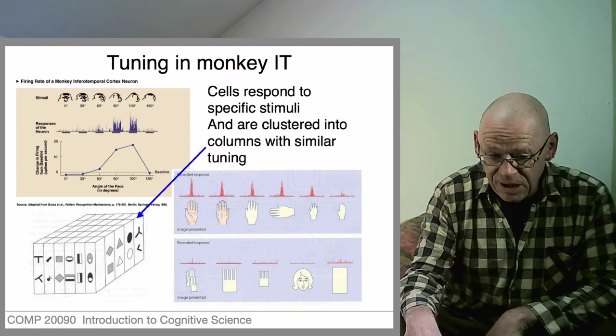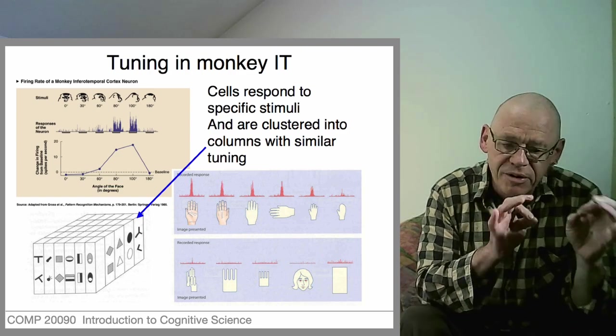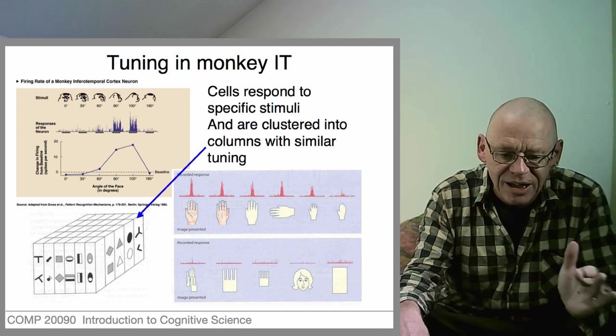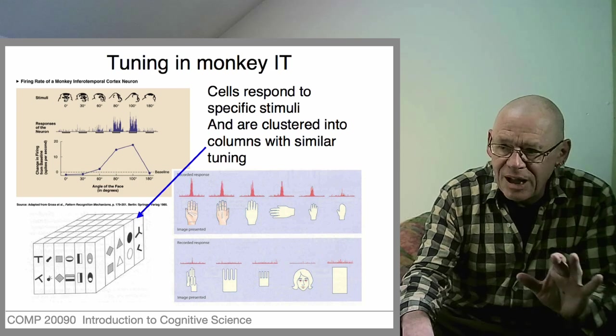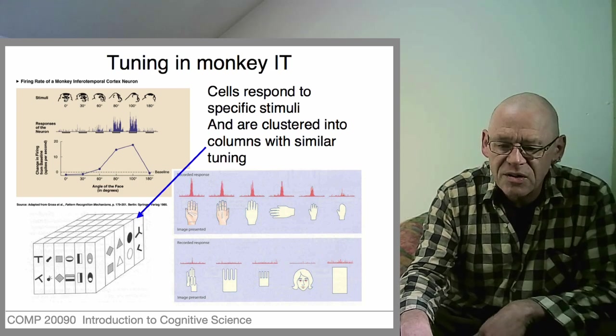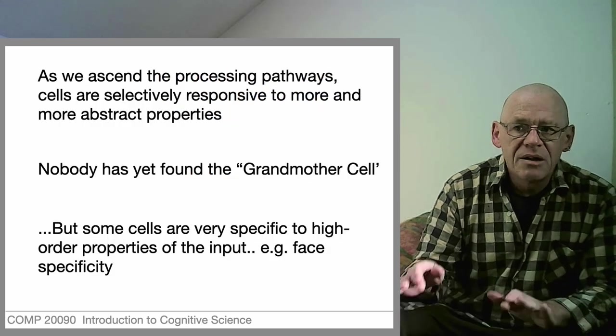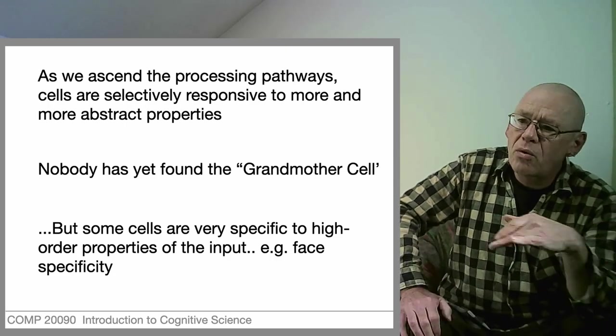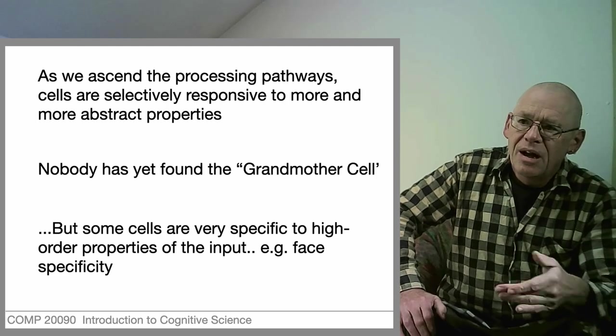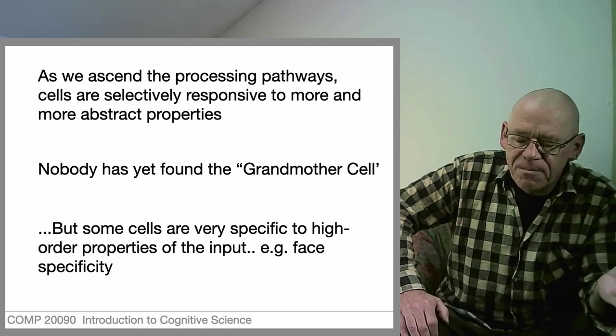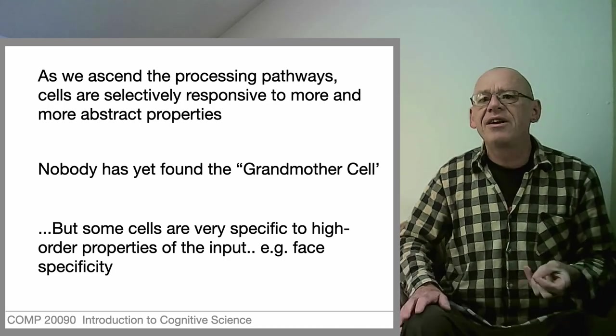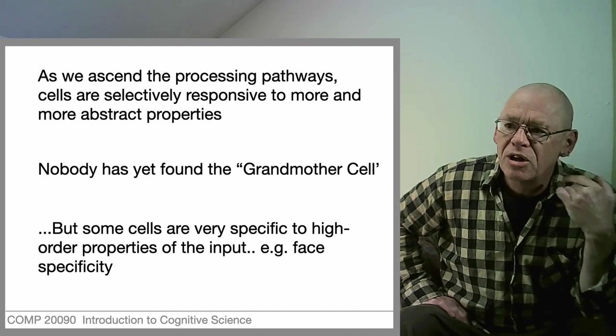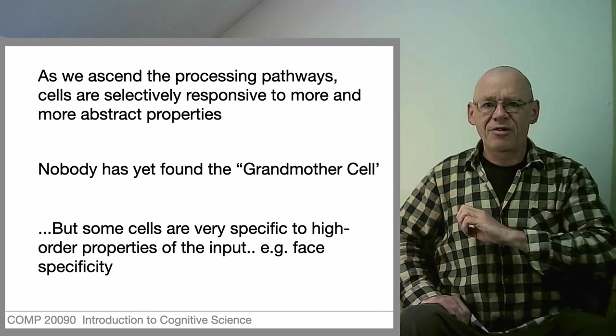As you dig around in inferior temporal cortex, it's very bewildering because the cells respond to so many different things. We do find similarities between neighboring cells, but the overall organization is somewhat bewildering. As we look deeper into the brain, we find cells that are responsive to more and more abstract properties and less and less the play of light. This gave rise to the idea that you might someday find a cell in your brain that responded only to something very specific, like your grandmother's face.